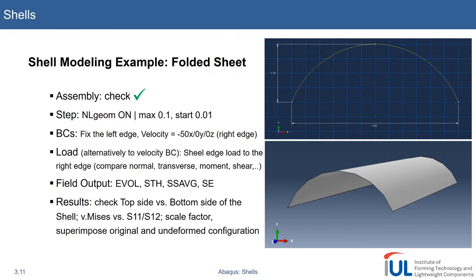Then we'll apply some boundary conditions. The left edge we will fix, and then the right edge we will select and move it to the left. So we will create a shape like this, or this is at least what we desire.